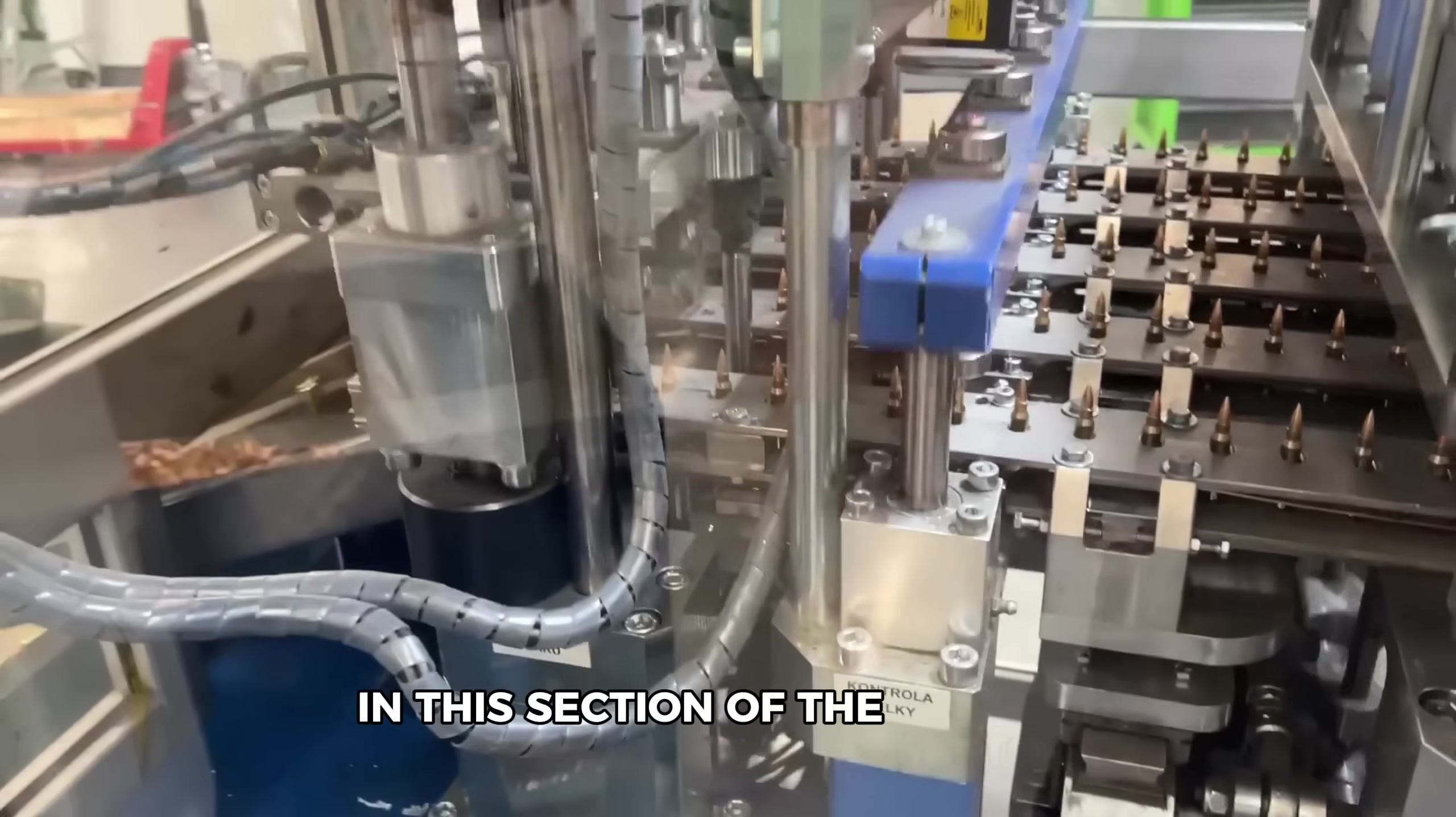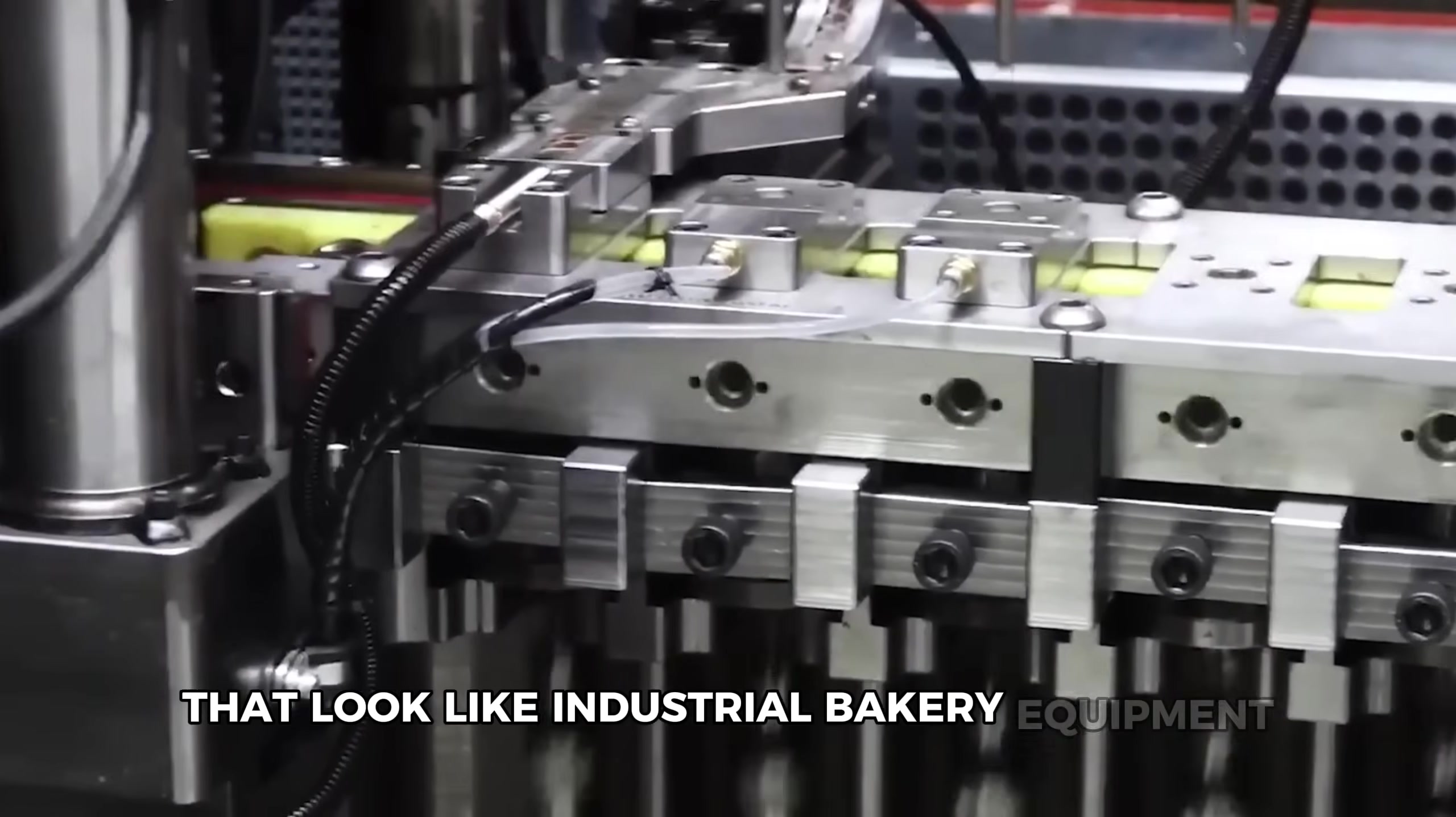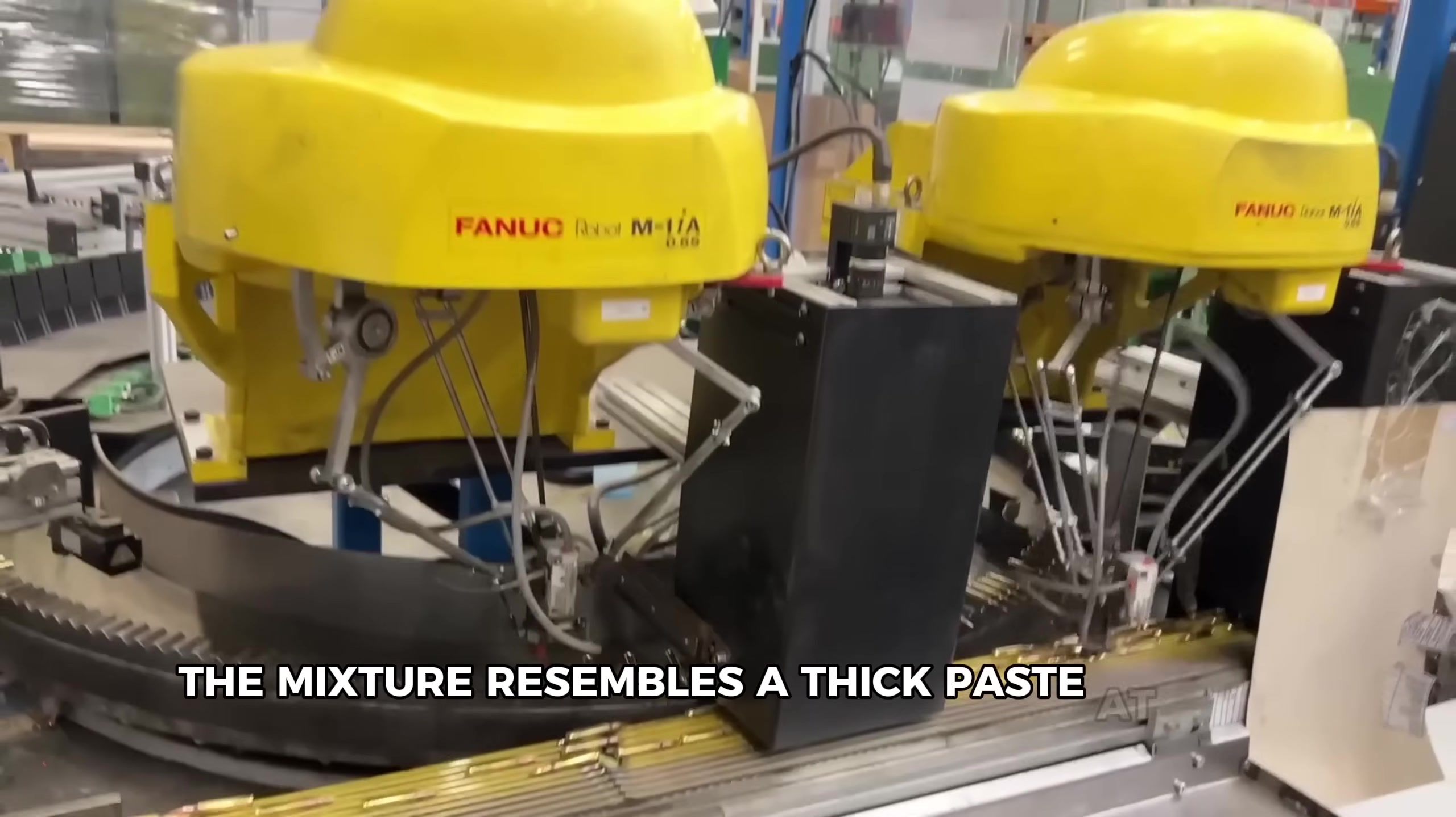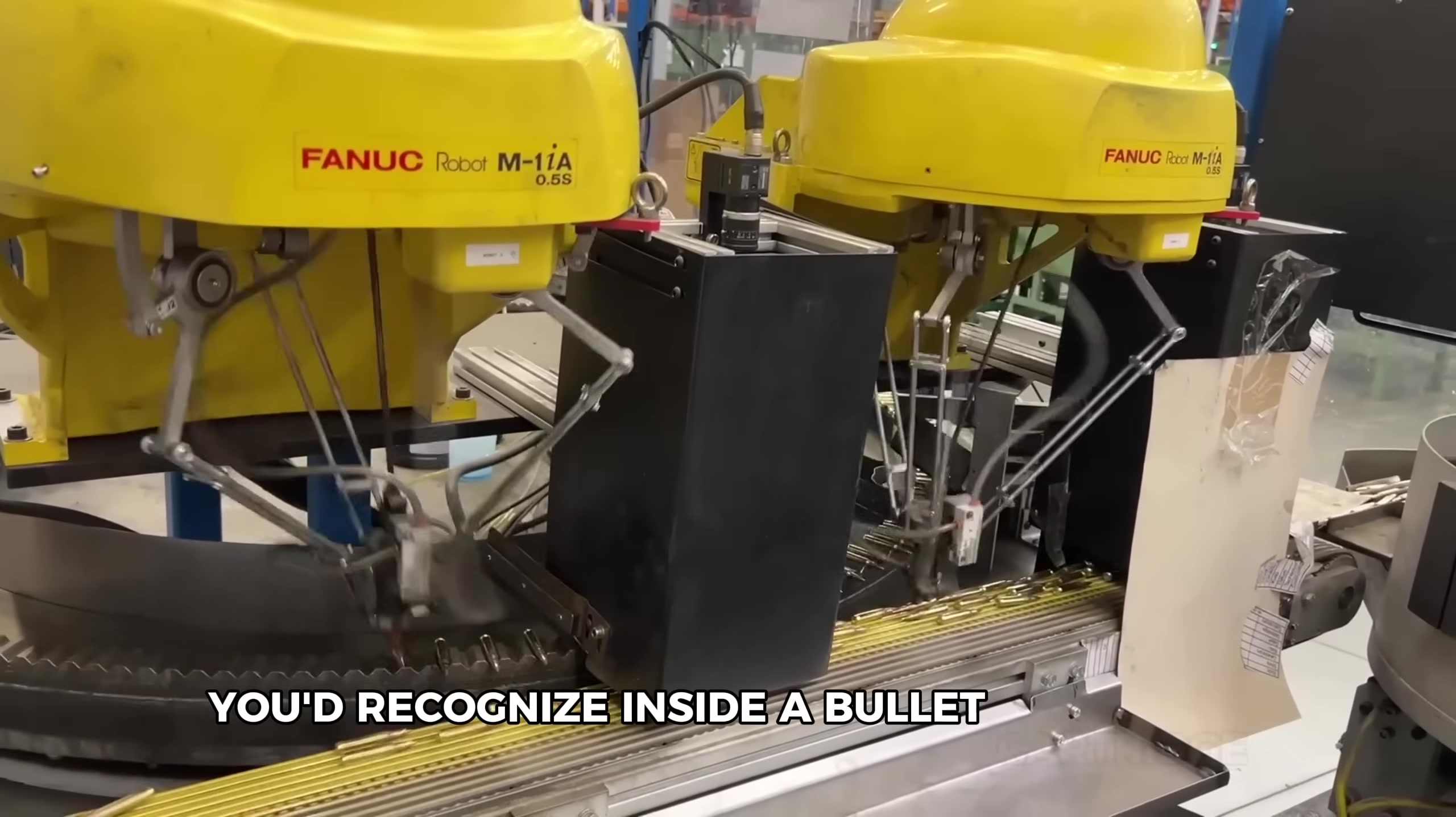In this section of the factory, massive mixing machines that look like industrial bakery equipment combine nitrocellulose with various stabilizers and performance additives. The mixture resembles a thick paste at this stage, nothing like the finished product you'd recognize inside a bullet cartridge.